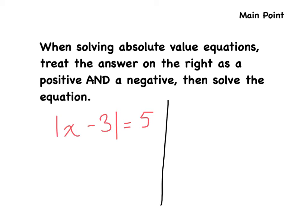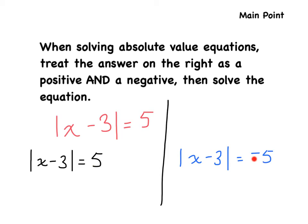We rewrite it both ways. Positive side: the absolute value of x minus 3 equals 5. Negative side: the absolute value of x minus 3 equals negative 5. For the positive side, we add 3 to both sides — those cancel — leaving x is equal to 8.